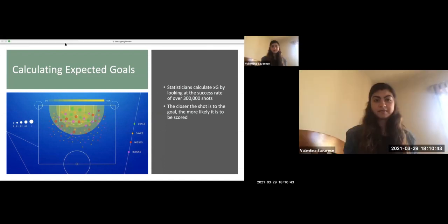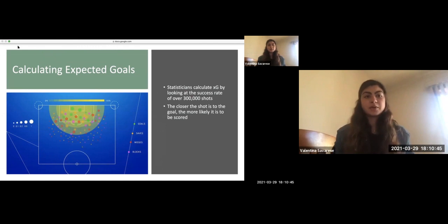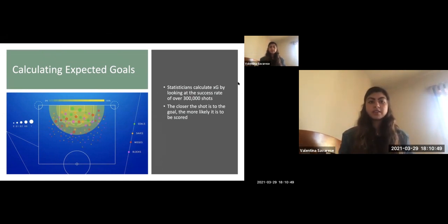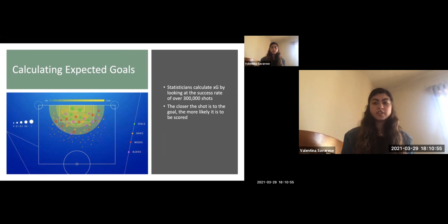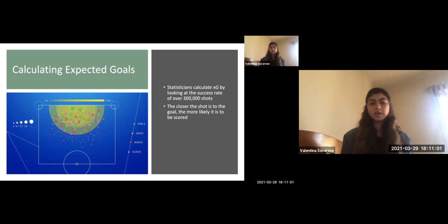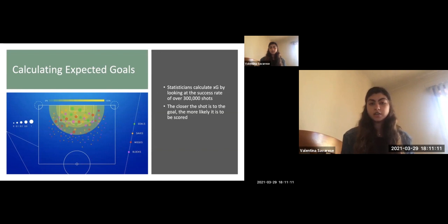This covers how you calculate an expected goal. It ranges from zero to one — the closer the shot is to the goal, the more likely it is to be scored, meaning it'd be closer to one. If you're shooting from halfway, it would definitely be closer to zero. Statisticians calculate expected goals by looking at the success rate of over 300,000 shots.